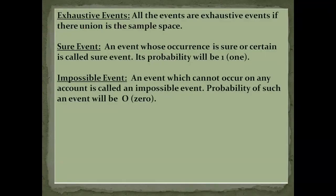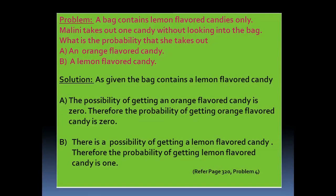Then exhaustive events: all events are exhaustive if their union is the sample space. Next is a sure event: an event whose occurrence is sure or certain is called a sure event, and its probability will be 1. An impossible event is an event which cannot occur under any account, and the probability of such an event will be 0.